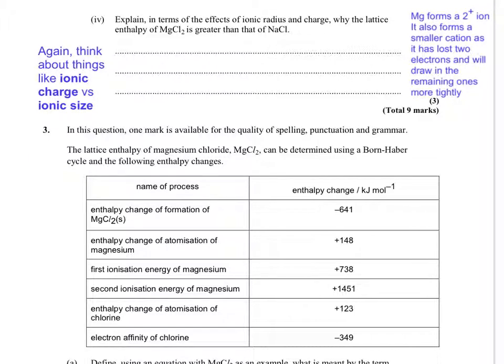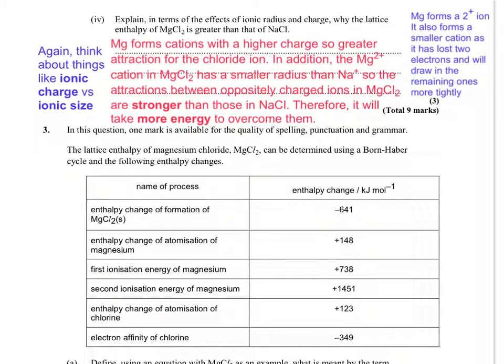So magnesium forms a cation with a higher charge, so greater attraction for the chloride ion. In addition, the Mg2+ cation in MgCl2 has a smaller radius than Na+, so as such, the attractions between oppositely charged ions in MgCl2 are stronger than those in NaCl. The result of this is that it takes more energy to overcome the electrostatic attractions in MgCl2 than it does in NaCl. So let's move the page down. It looks like we've got some data to deal with, possibly a Born-Haber cycle. Well, definitely a Born-Haber cycle, because it actually says it. I didn't read that before speaking.